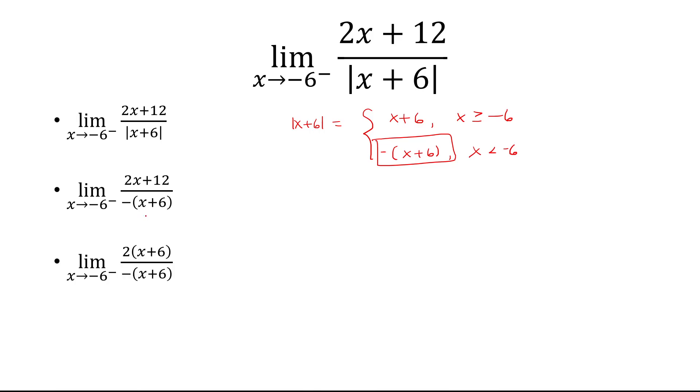And now I can factor out a 2 from the numerator. So that becomes 2 times x plus 6. The x plus 6s are going to cancel. So I'm left with negative 2. And so the limit as x approaches negative 6 from the left of negative 2 is equal to negative 2. And that is my answer.